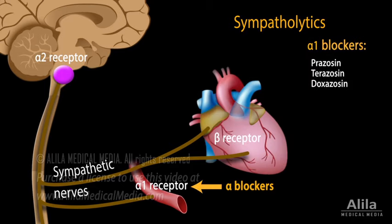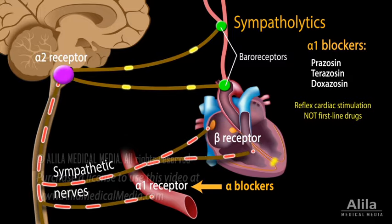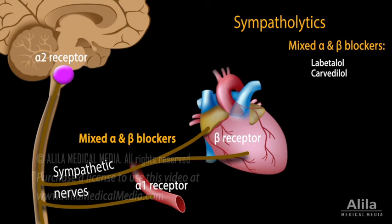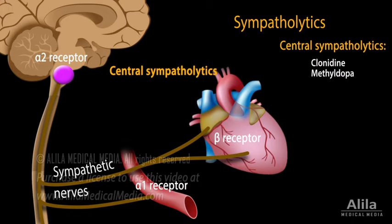Alpha-1 blockers are effective in reducing sympathetic vasoconstriction, but their action can lead to an excessive baroreceptor-mediated reflex that increases heart rate and produces tachycardia. Non-selective adrenergic antagonists block both alpha and beta receptors. By inhibiting beta receptors in the heart, they are able to lower blood pressure without inducing reflex tachycardia. Central sympatholytics stimulate alpha-2 receptors in the brainstem to reduce sympathetic tone. They reduce heart rate, contractility, and vasoconstriction, but may also cause sedation.